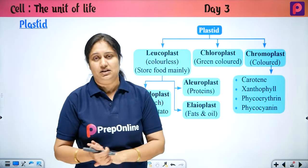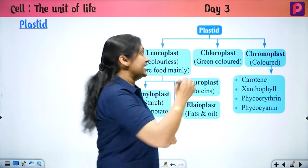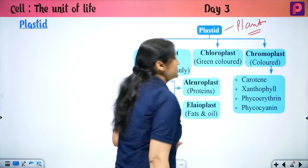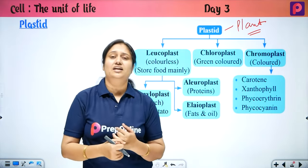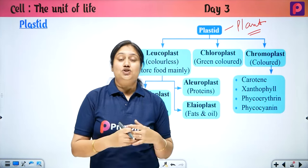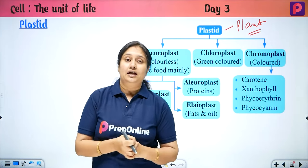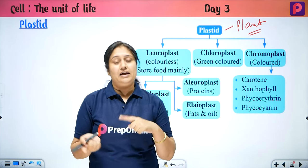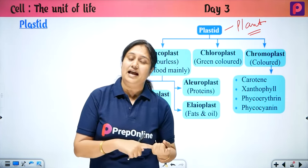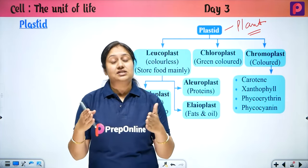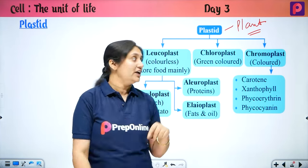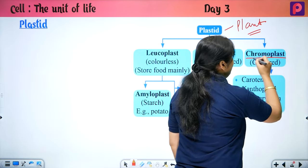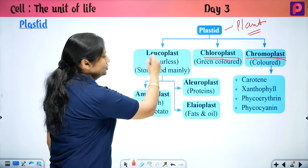After mitochondria, let's come to plastids. Plastids are present in plant cells. What is plastid? Plastid performs some functions: it gives color to plants, it stores food, and it helps in food production. Plastid can be three types: Chromoplast, Chloroplast, and Leucoplast.